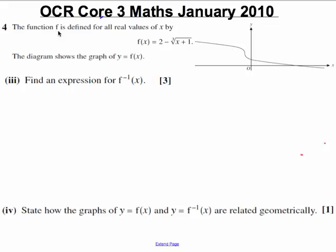Let's remind ourselves, it gave us a function f, where f of x was equal to 2 minus the cube root of x plus 1. It starts off in part 3 by asking us to find an expression for f to the minus 1 of x.